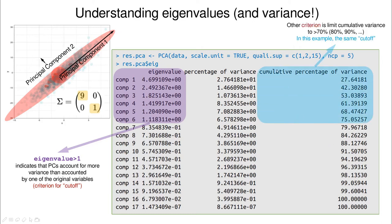Another way to look at the data is the cumulative percentage. Sometimes you fix a threshold — say you want 70% or 80% compression — and you find the last eigenvalue at which you overcome that threshold. In this case, both criteria arrive at the same result: six dimensions provide the desired level of accuracy.